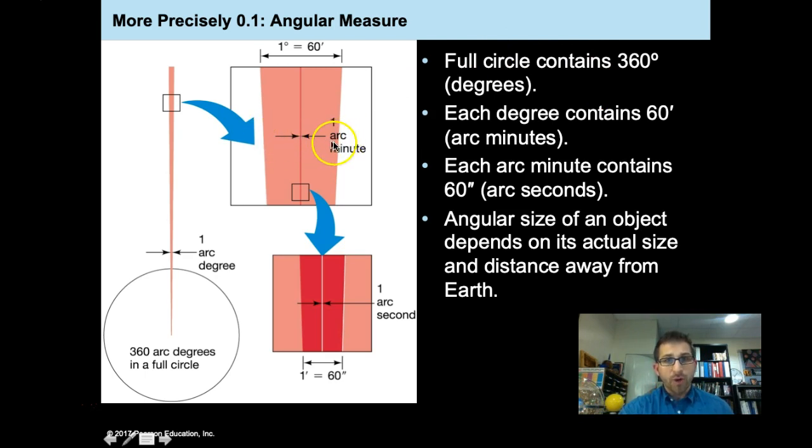So if this line here represents one degree, one arc degree, within the one arc degree is 60 arc minutes. Now, if we were to zoom in on this even further, this little box here, we would see that each of these arc minutes can be further separated into 60 arc seconds.